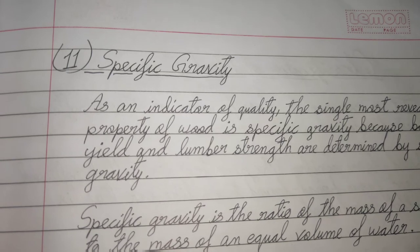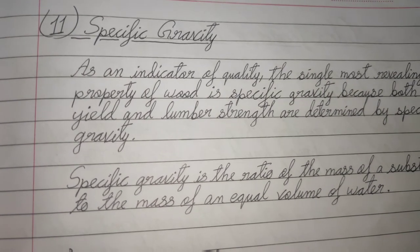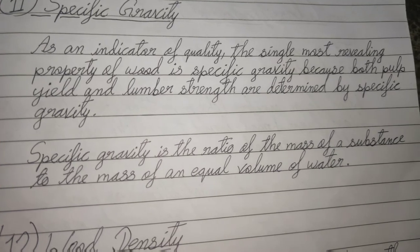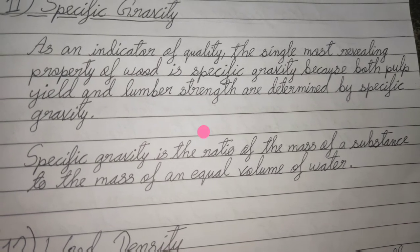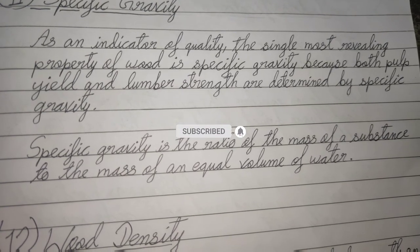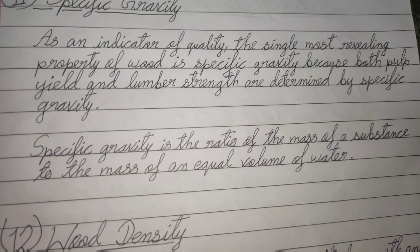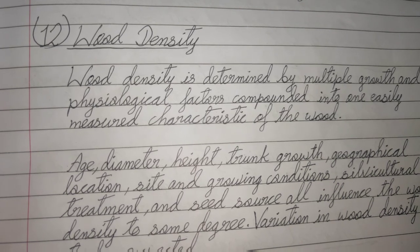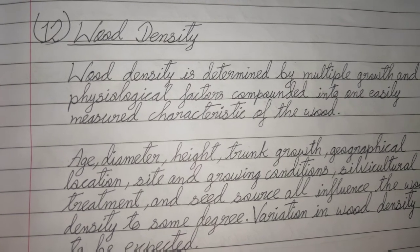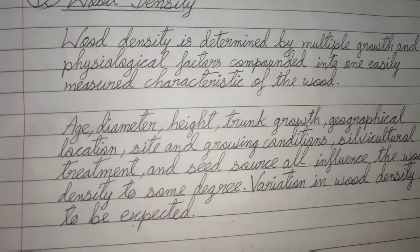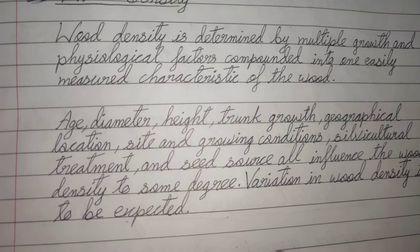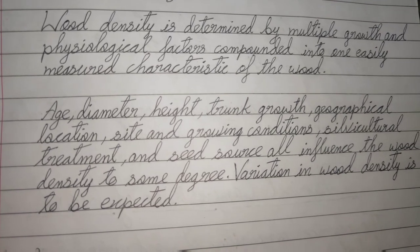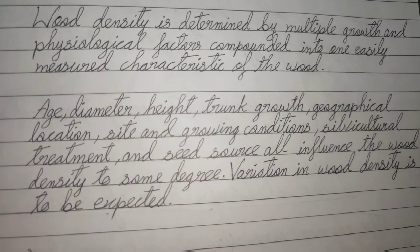Specific gravity is also one of the physical properties of wood. As an indicator of quality, the single most revealing property of wood is specific gravity, because both pulp yield and lumber strength are determined by specific gravity. Specific gravity is the ratio of the mass of a substance to the mass of an equal volume of water. Wood density is determined by multiple growth and physiological factors. Age, diameter, height, trunk growth, geographical location, site and growing conditions, silvicultural treatment, and seed source all influence wood density to some degree. Variation in wood density is to be expected.